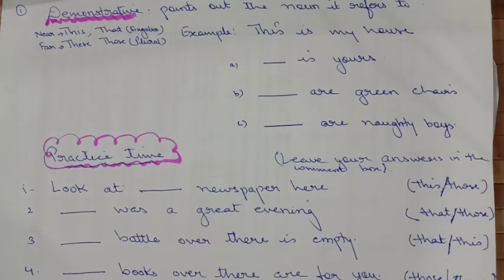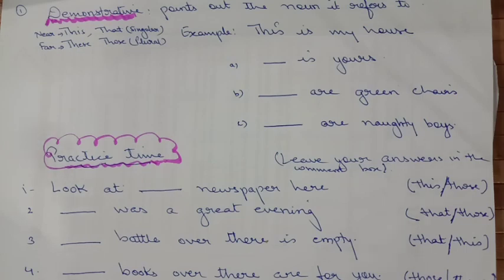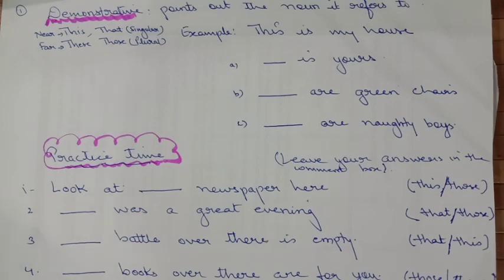The first one is demonstrative pronoun. A demonstrative pronoun actually points to the noun it refers to. For things which are near and singular, you will say 'this' or 'that.' And for things which are far and plural, then you will say 'these' and 'those.'